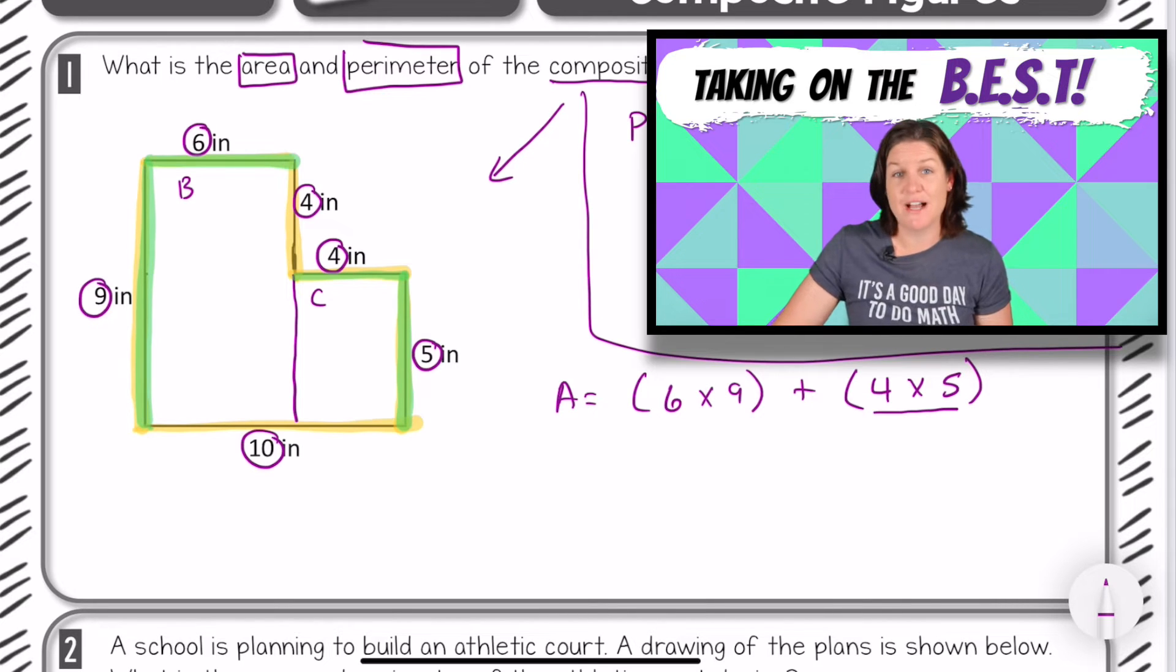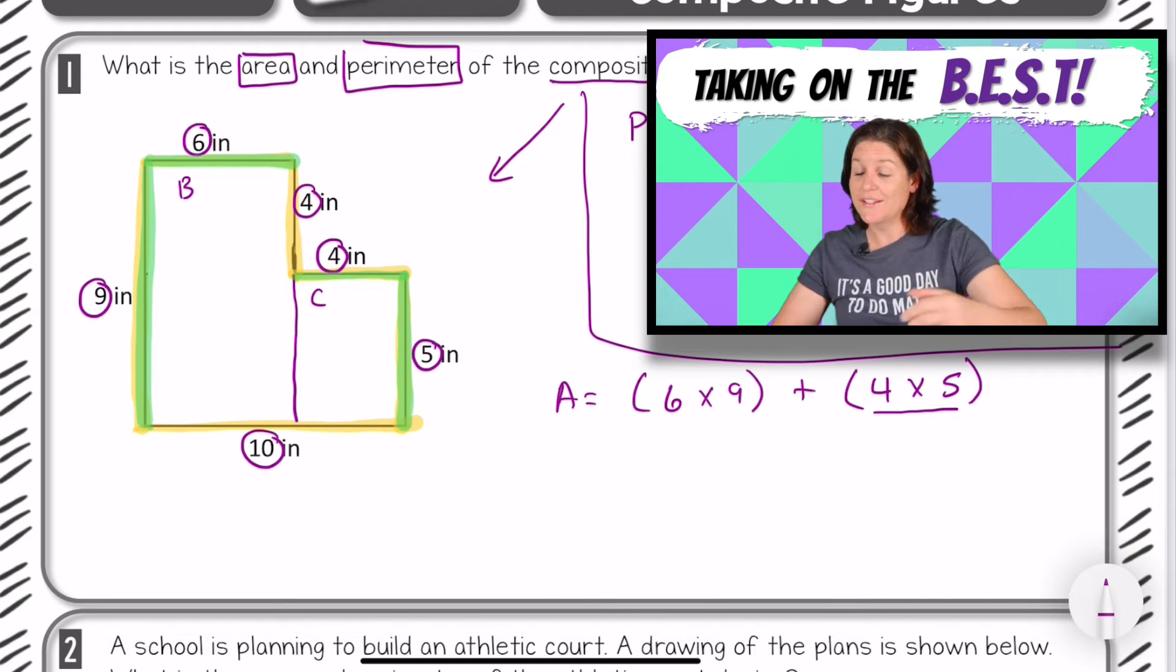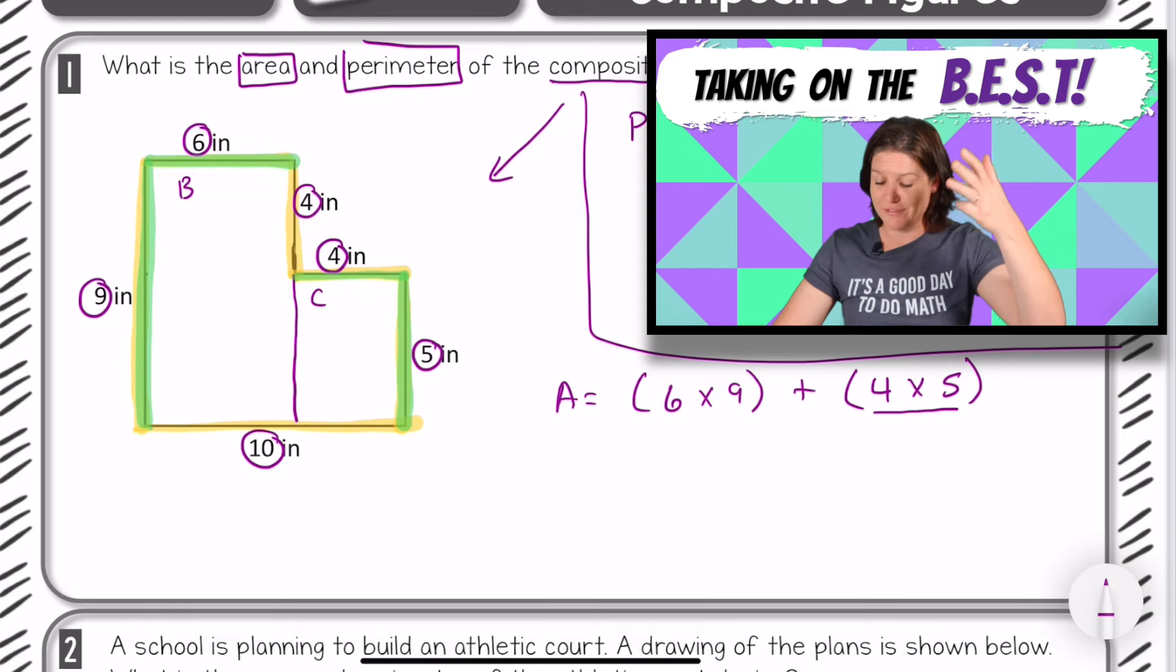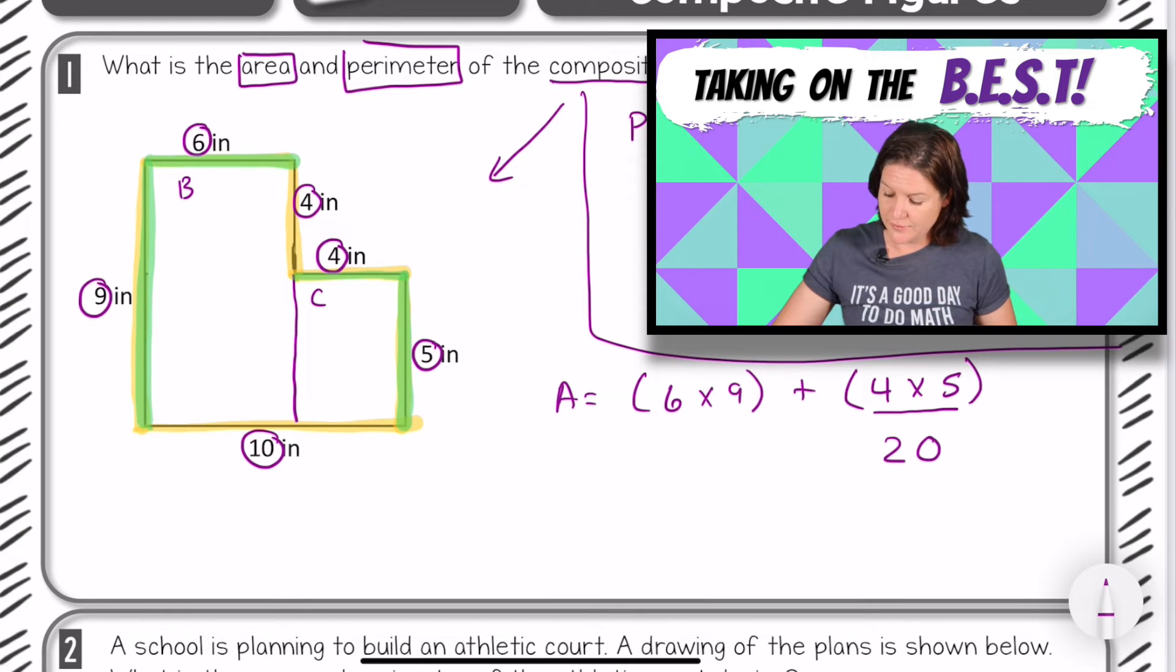So right away, I know that 4 times 5, that equals 20. And now go ahead and pause the video and use a strategy that you know to figure out what 6 times 9 is, then press play to come back and close out this problem. All right, so what was the product that you got to for 6 times 9? 54. Awesome.